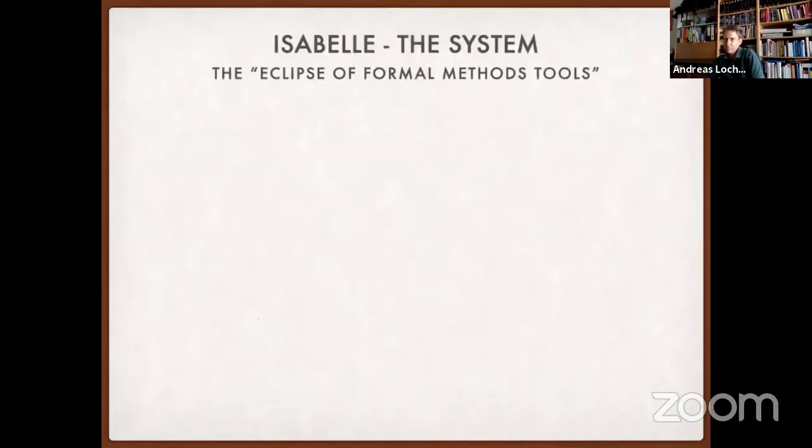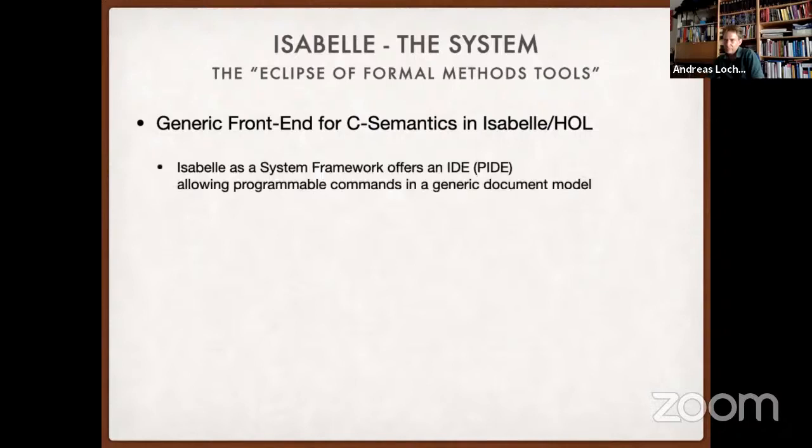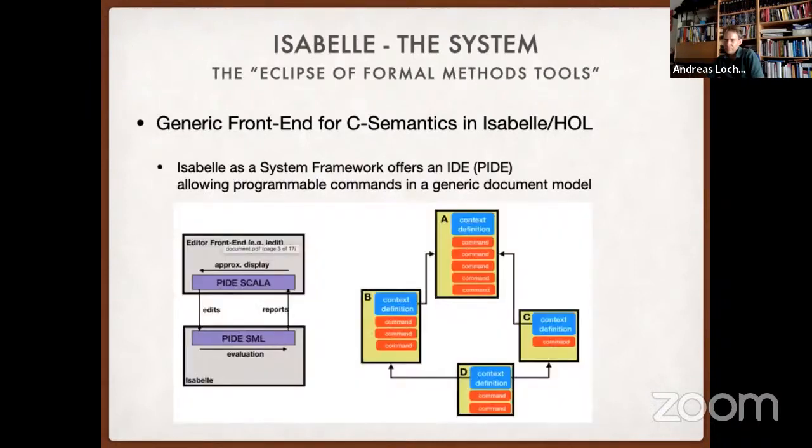Now what are the particular advantages in choosing Isabelle or the Isabelle platform for building a front-end for C or for programming languages in general? Isabelle has a generic front-end, and we can build a generic front-end which is an infrastructure for C semantics in Isabelle/HOL. For that we reuse Isabelle as a system framework that offers an IDE, offering a particular document model that is basically an asynchronous graph consisting of documents having commands, and front-end technology which is asynchronous, sitting on top of this document model.